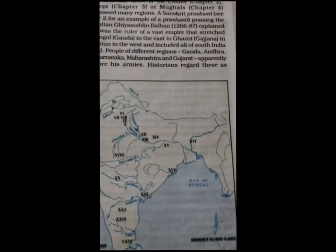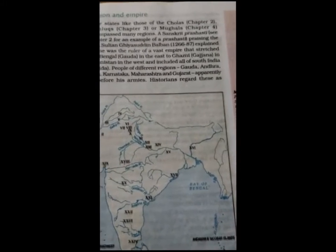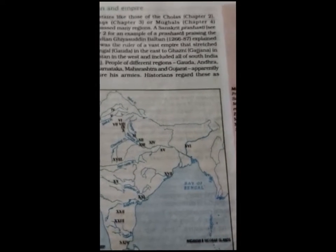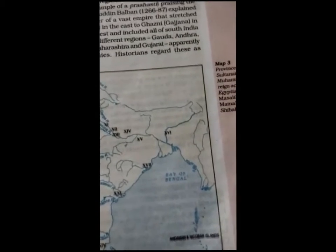For example, a Sanskrit Prashasti praising the Delhi Sultan Ghiyasuddin Balban was written. Prashastis are the praisings of rulers — they described a ruler's valor and greatness. Historians then read the Prashastis and regarded them as exaggerated claims of conquest, meaning kings had written about their battles in an exaggerated manner in the Prashastis.